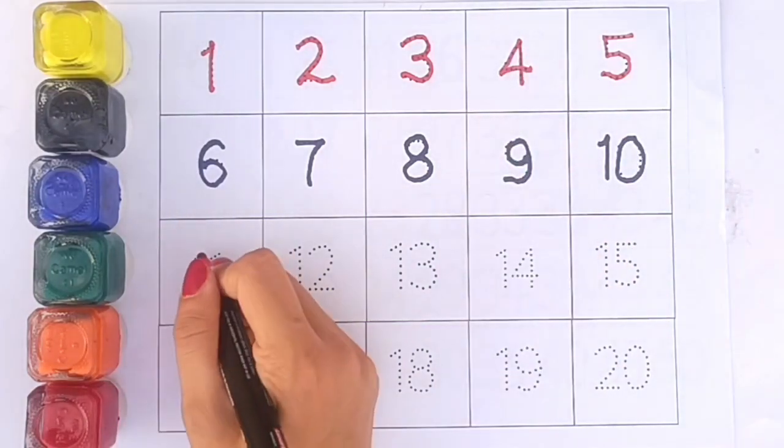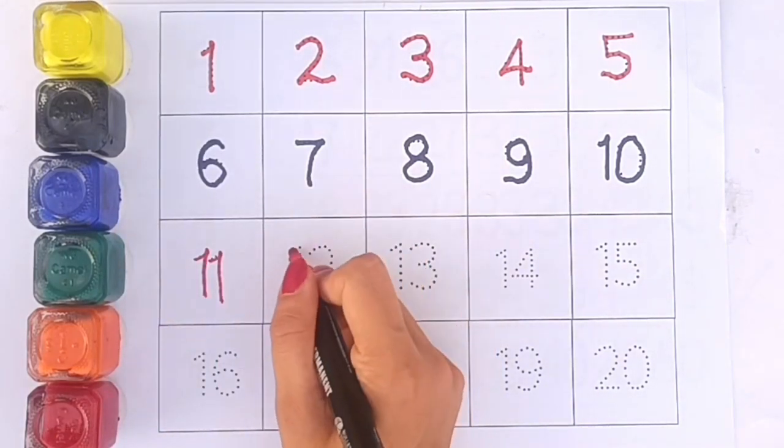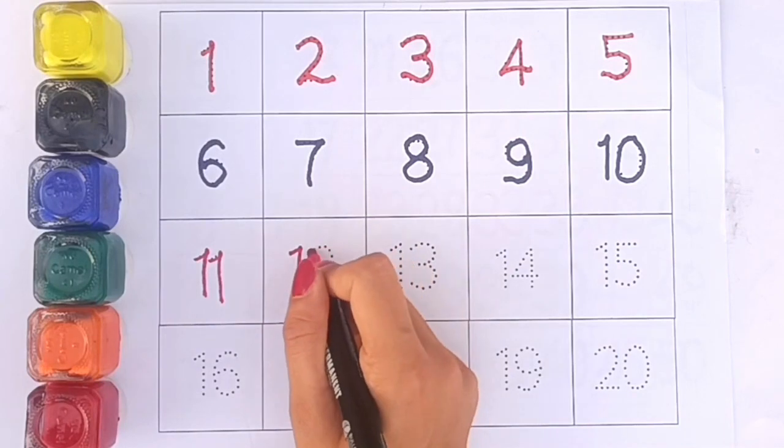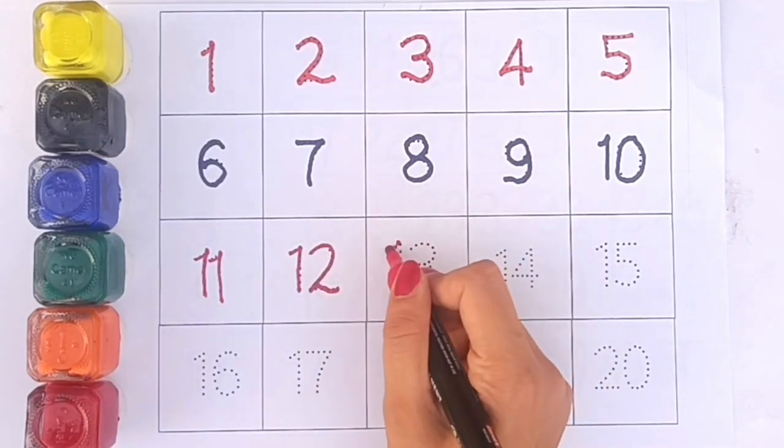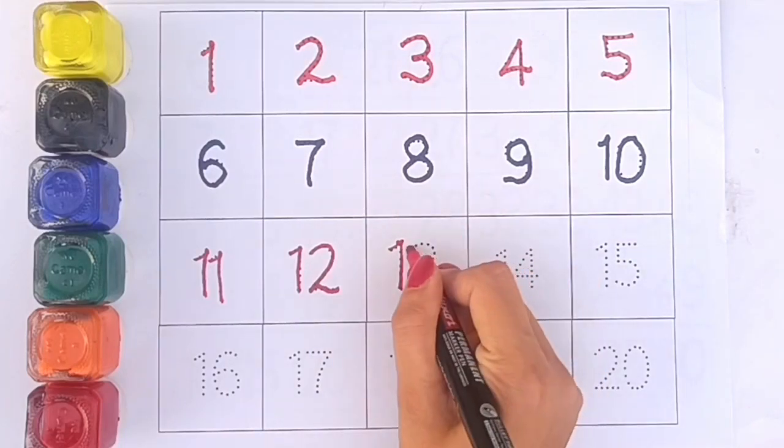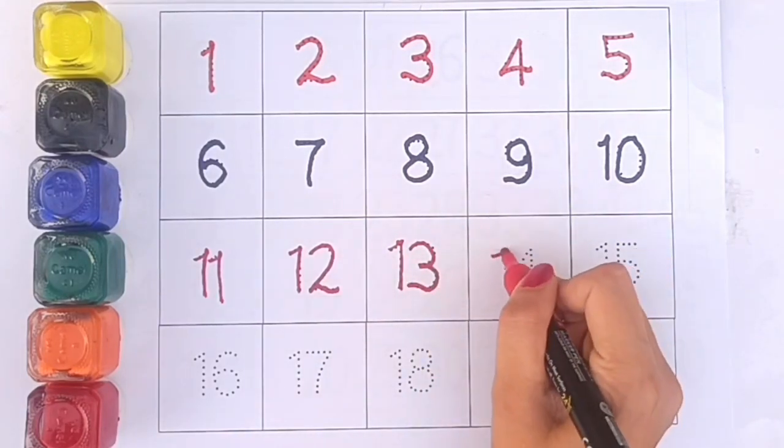Red color. We have eleven. One-one, eleven. One-two, twelve. One-three, thirteen.